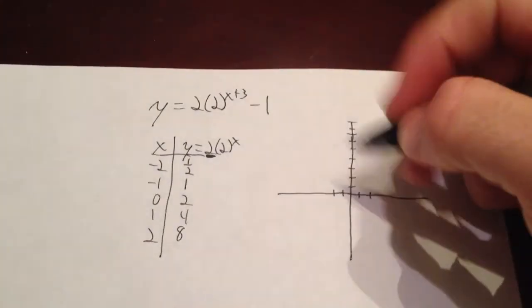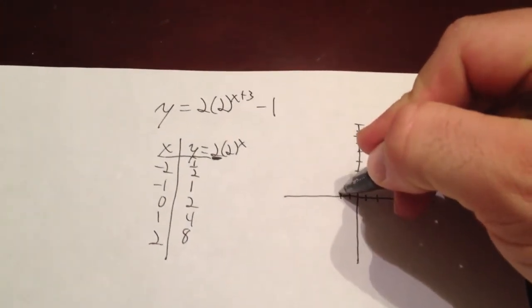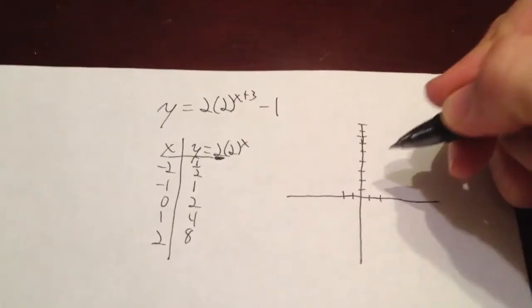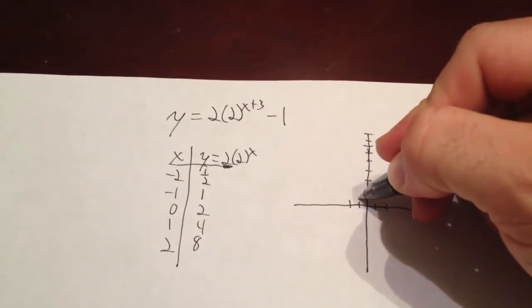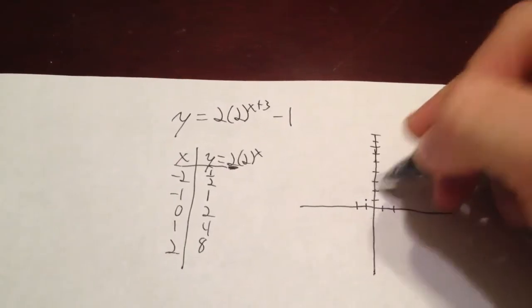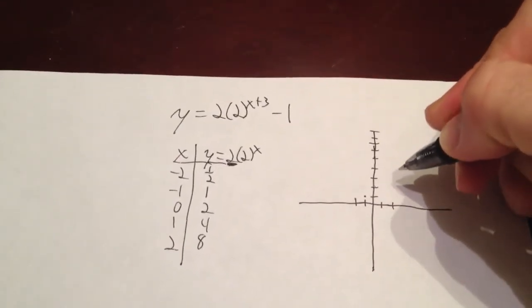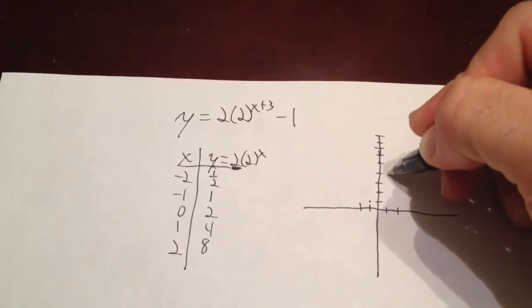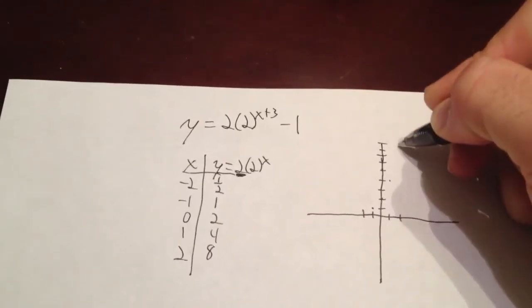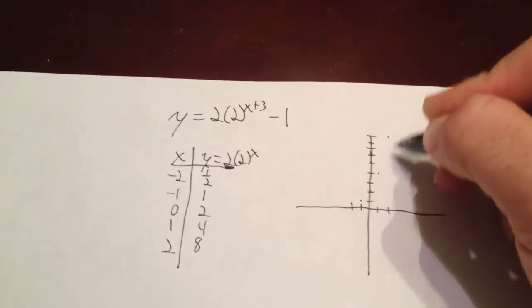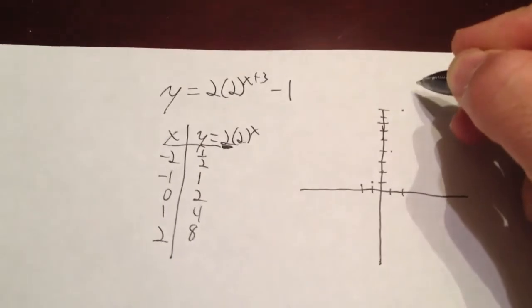So, anyway, you've got negative 2 and 1 half is going to be here. I'm just going to put a light little dot. Negative 1, 1 is going to be here. I'm going to put a light little dot. 0, 2 is going to be the y-intercept right there. Put a light little dot. 1, 4 is going to be here. And then 2, 8 is going to be up here. Notice it has that ramp shape that we talked about.